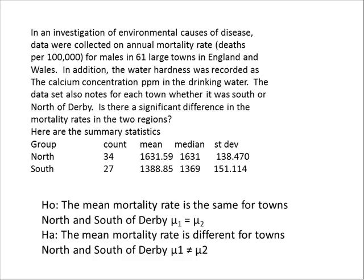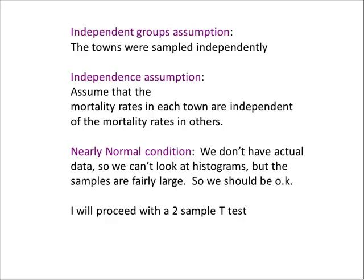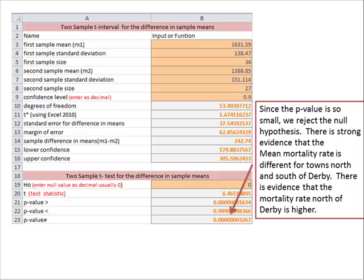We know that the towns were sampled independently. We have to assume the mortality rates in each town are independent of other mortality rates, like maybe there's not some big feud or gang violence, or there's a tit-for-tat death rate, hopefully not. We don't have actual data, so we can't look at histograms, but the samples are pretty large, so it should be okay.